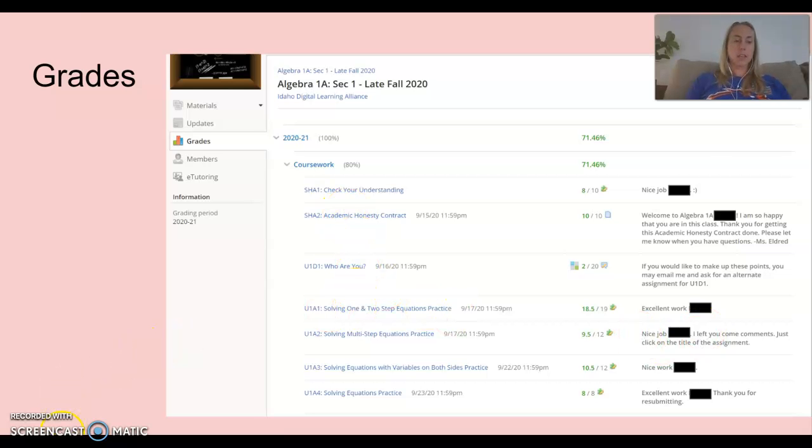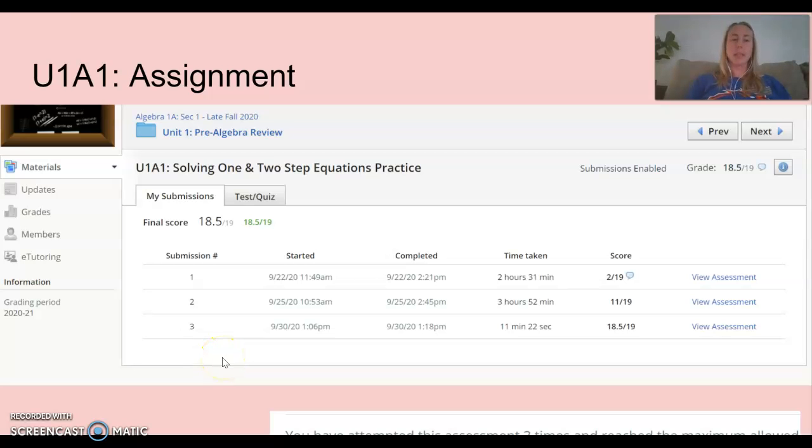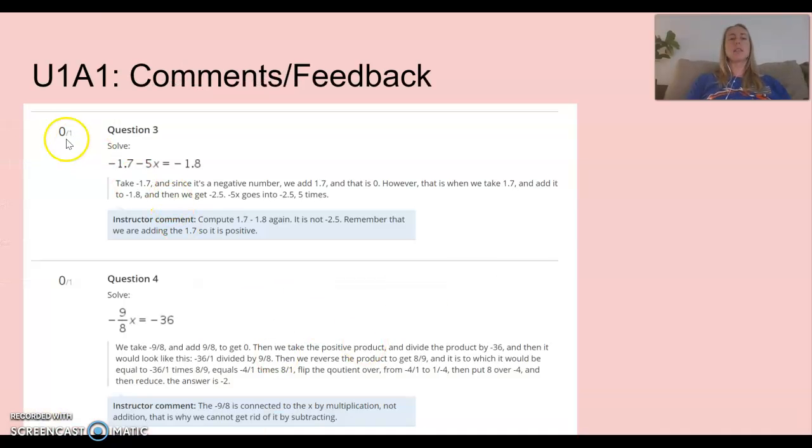Then if a student actually clicks on the individual assignment they'll see something like this. Each student has three submission attempts on each assignment. So their grade is not final when they just submit the assignment, they can actually submit again. So after they submit the very first time you'll see this little comment bubble and that means that I wrote individualized comments to your student. So they need to click this blue button called view assessment and when they do that it will look like this and they can see that they got zero points on this question. This is what your student wrote and this is my comment with some helpful tips or questions or instructions to go back to the lesson and get the pieces that they missed. So this is the feedback that I'm providing on every single assignment.